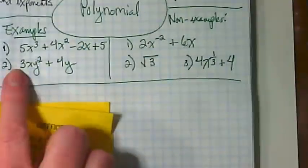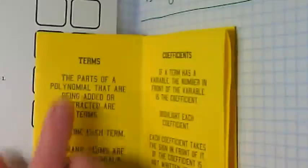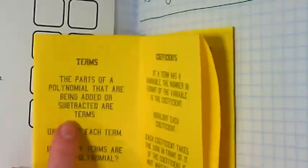So the terms, the parts of a polynomial that are being added or subtracted, are terms. We're going to write an example to the right in a moment where we underline each term.